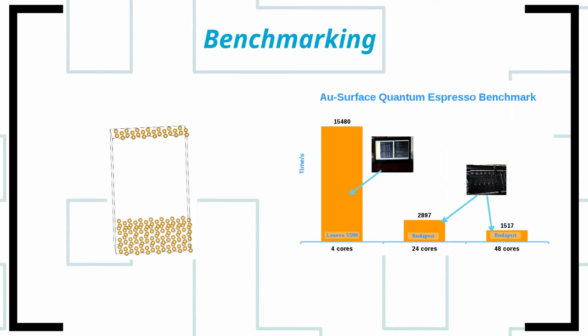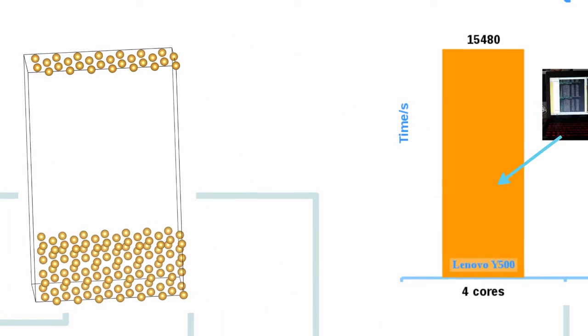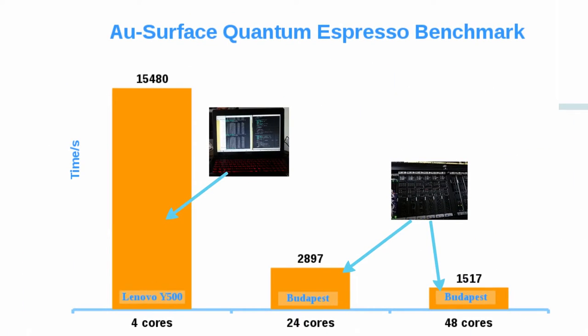Benchmarking was only performed with Quantum Espresso using a standard benchmark where the properties of a gold surface are calculated. The benchmark was run on the Budapest HPC machine with 24 and 48 cores and on my Lenovo laptop for comparison.